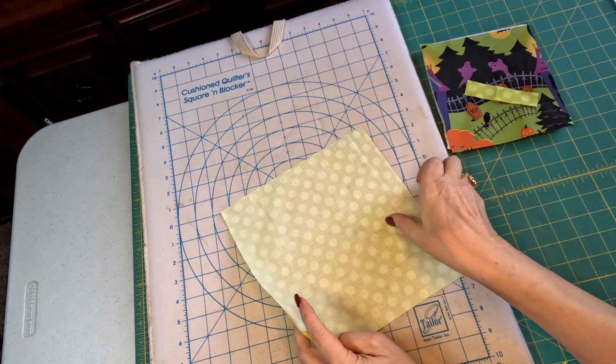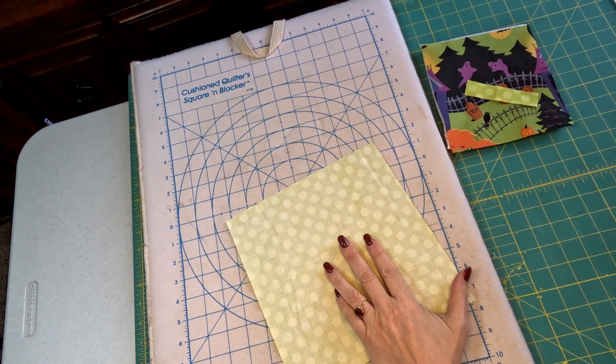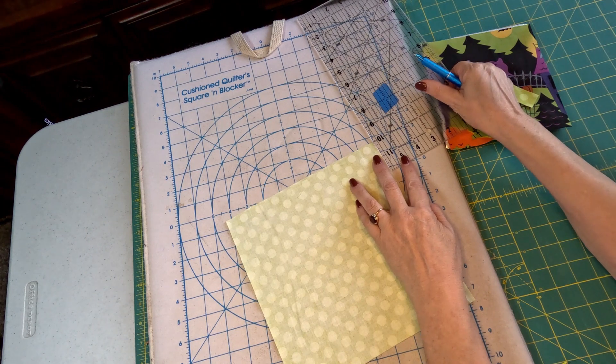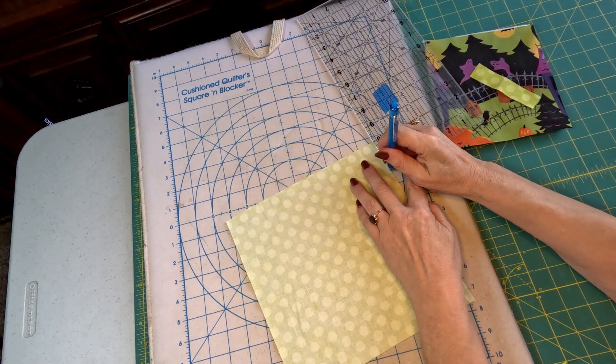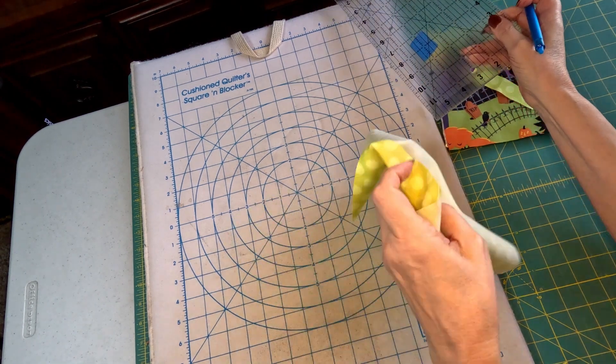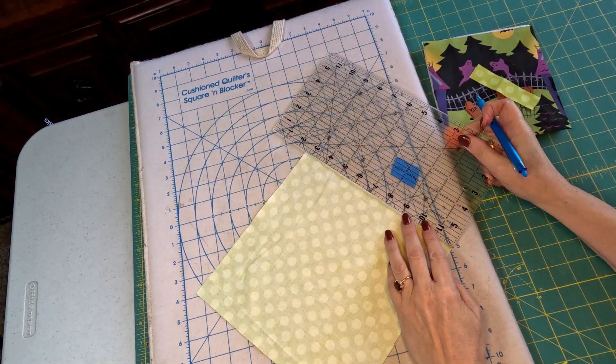The first thing we're going to do is we're going to take a ruler, and we're going to measure 2 inches down, not a fraction further, on all the corners.